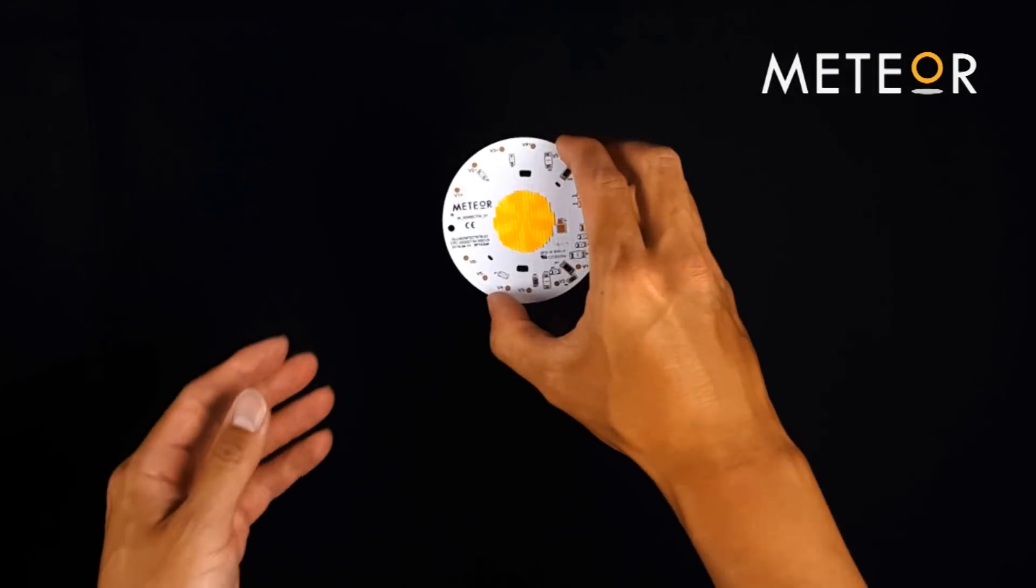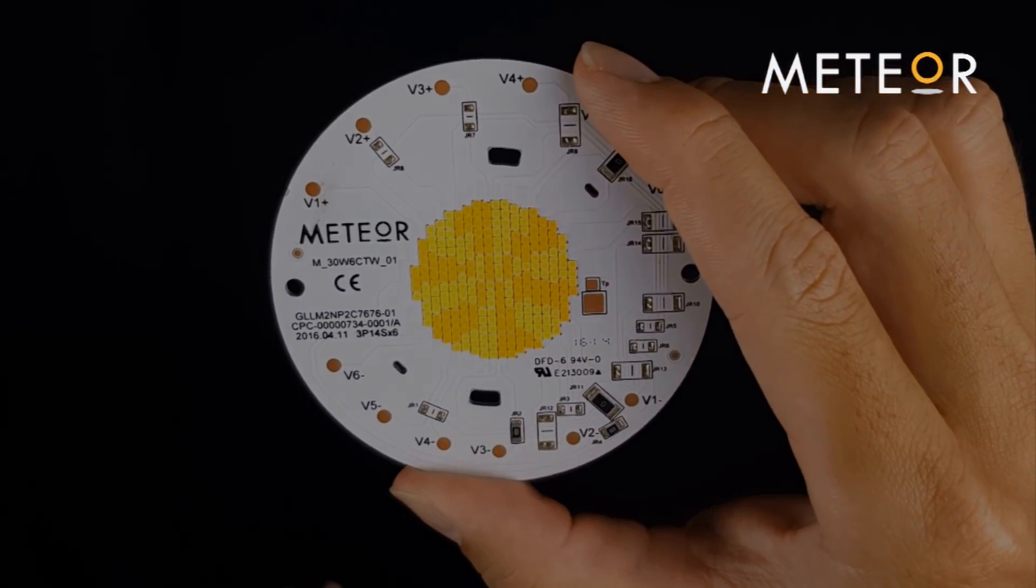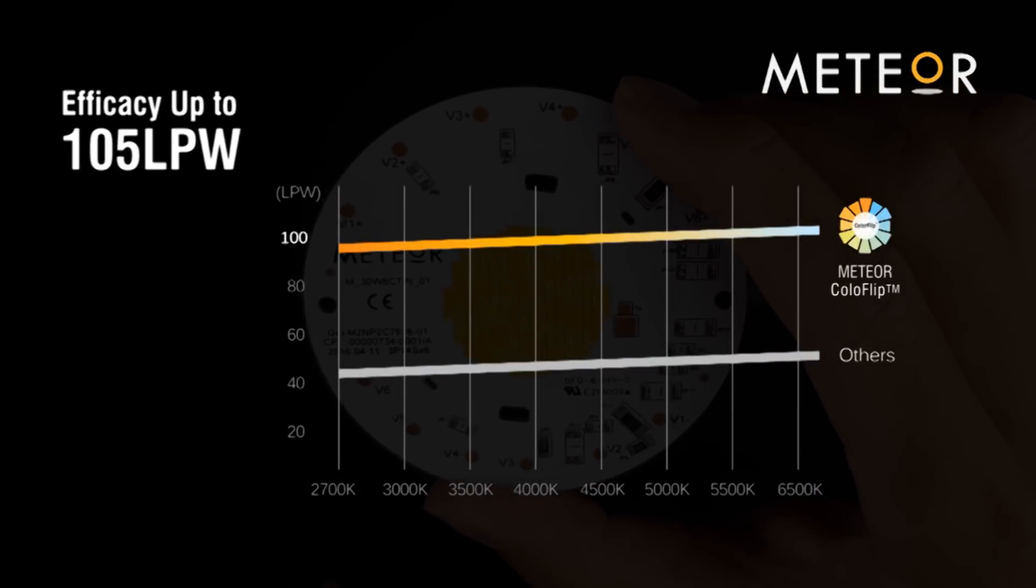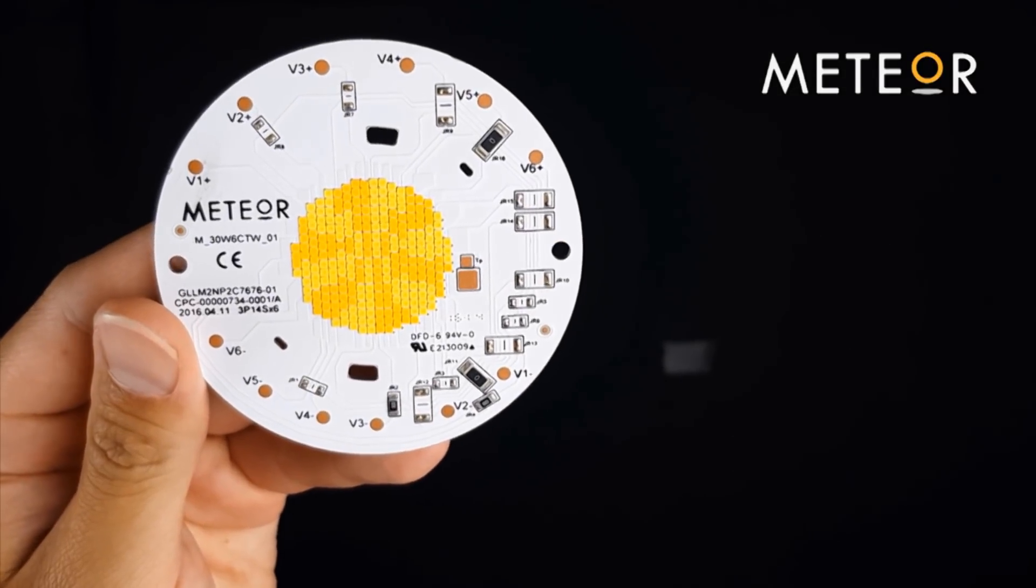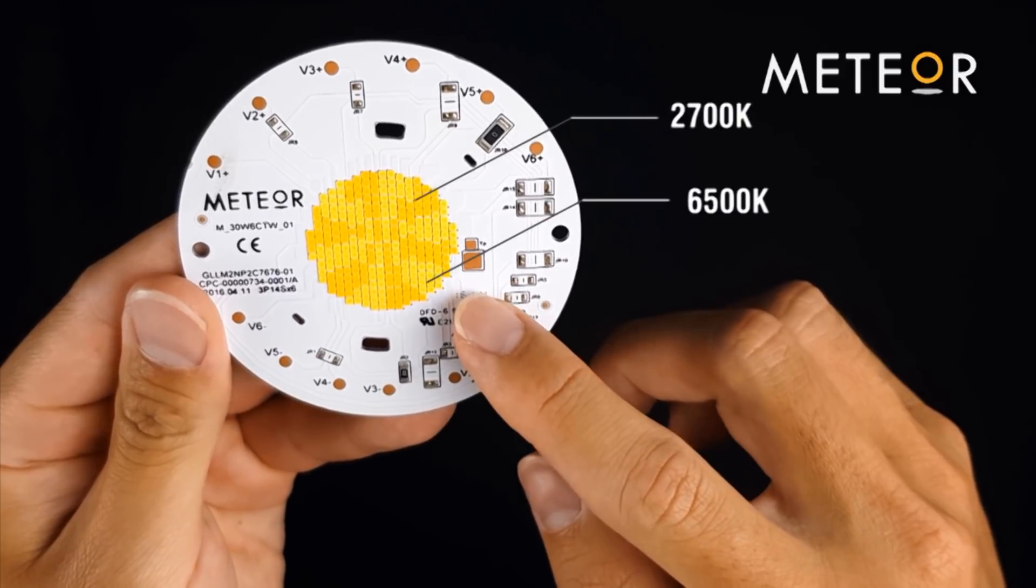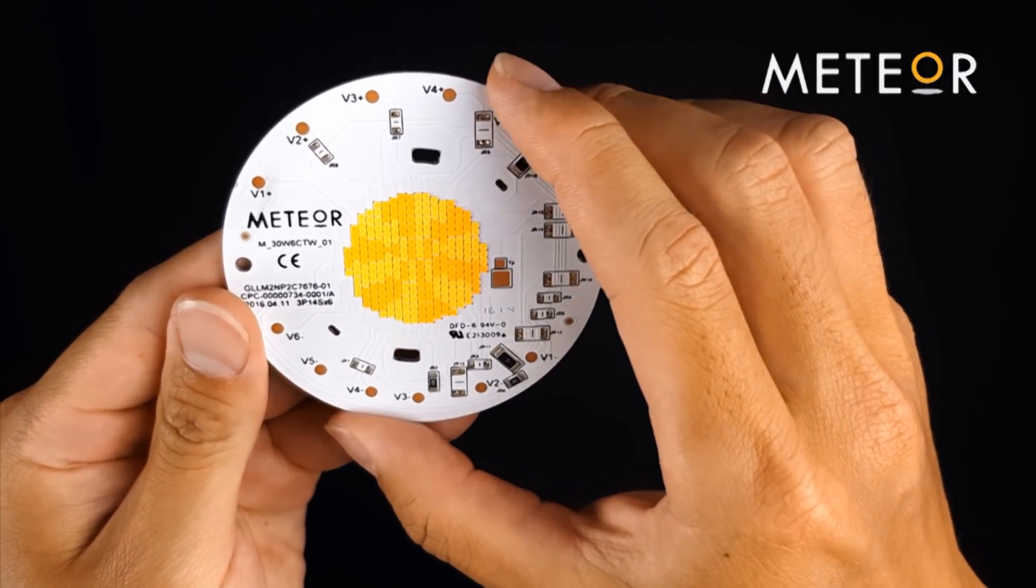While competing products currently on the market have an efficiency rating of 40-50 lumens per watt, Meteor's ColorFlip has an efficiency rating of 105 lumens per watt, 10,000 lumen output, a color rendering index exceeding 85, and a color temperature range of 2700 to 6500 degrees kelvin.